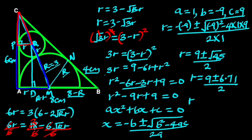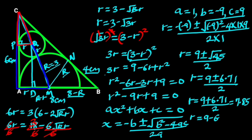It follows that r equals (9 plus or minus 6.71) all over 2. For plus: r equals (9 plus 6.71) all over 2, which is 7.85. For minus: r equals (9 minus 6.71) all over 2, which is 1.15.